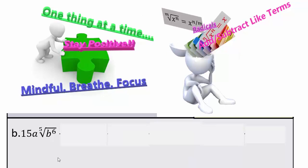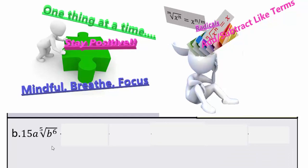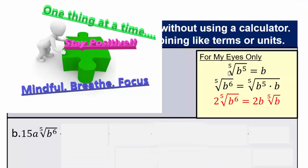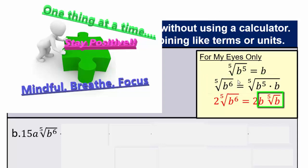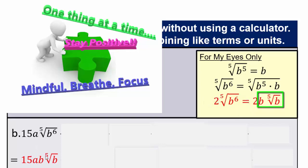Let's get back to our problem. Let's focus on this first term. Do you recognize this? In the previous problem, in the 'for my eyes only' column, we worked and simplified fifth root of b to the sixth to get b times fifth root of b. There was a 2 on the outside in the previous problem, but in our case we have 15a on the outside. So we will have 15a times b times fifth root of b. There's nothing new here because we already did that.